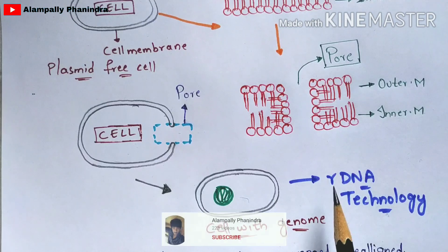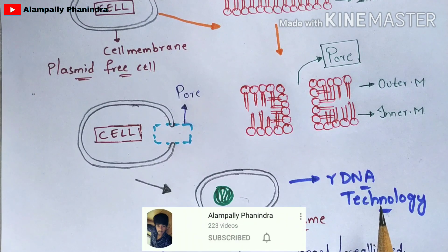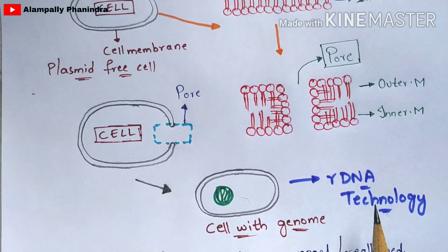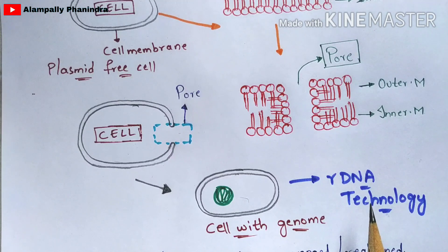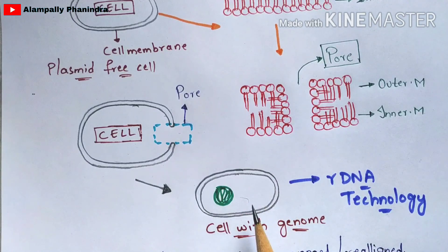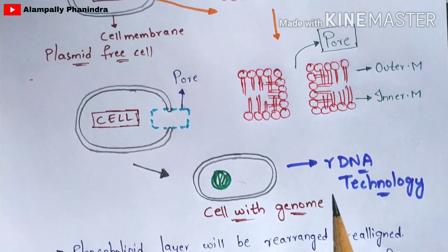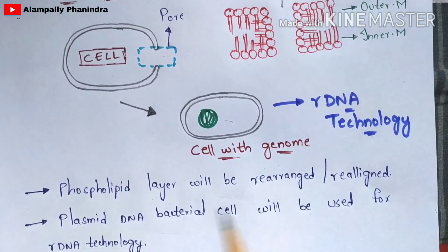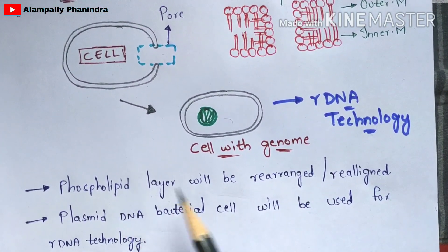This plasmid DNA bacterial cell can be used for rDNA technology. I have already explained rDNA technology in my previous video — the link is in the description box. The introduction and production of insulin are also explained there. It's better to watch that video first, then come to these techniques. This cell will be used for rDNA technology purposes.